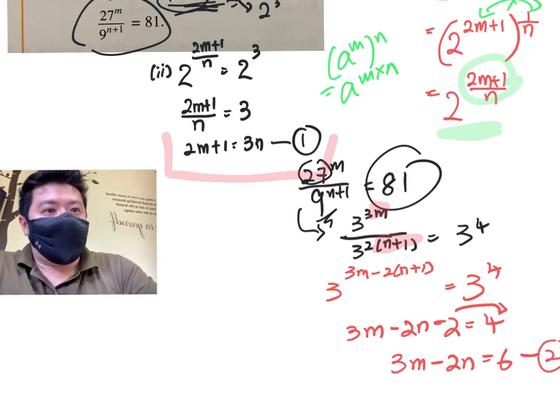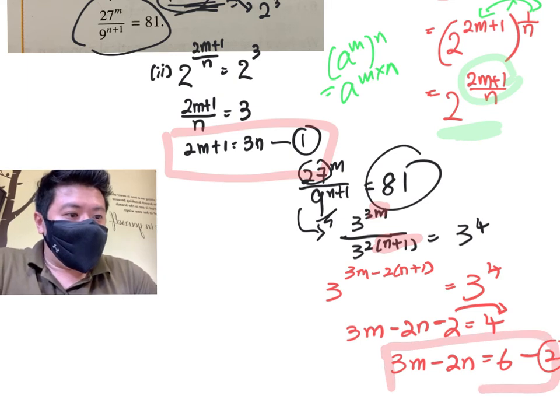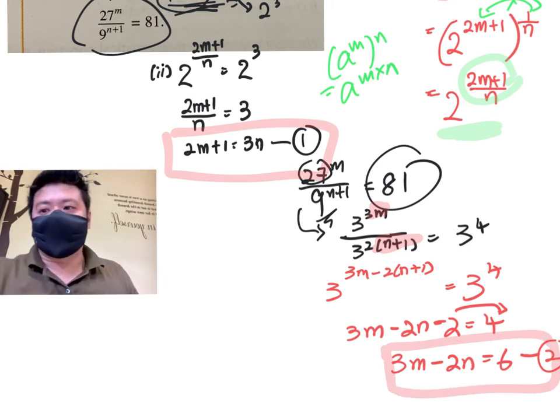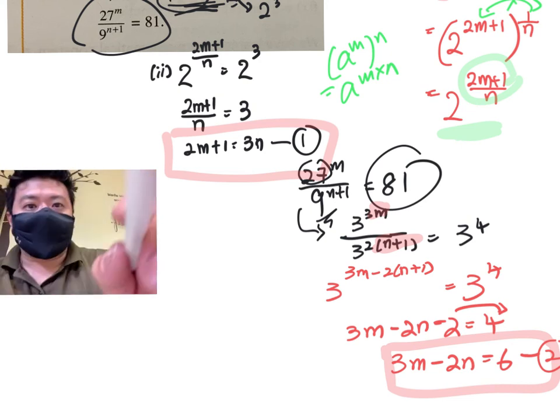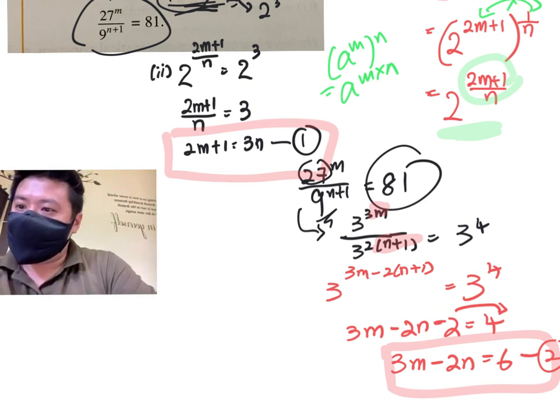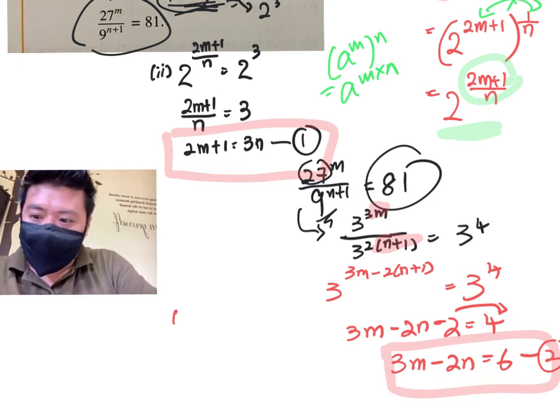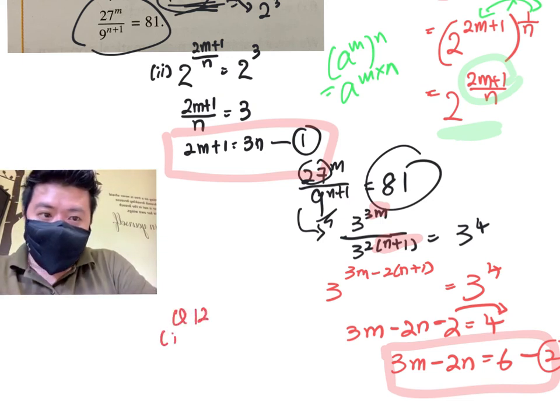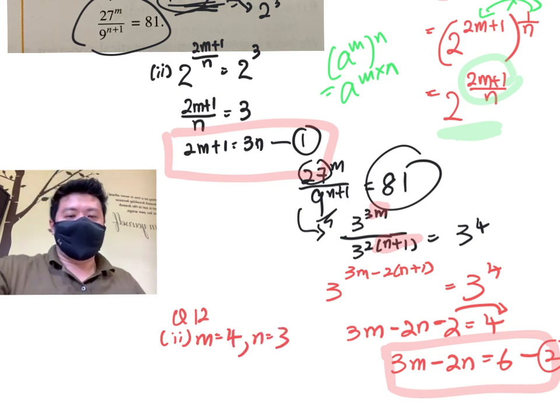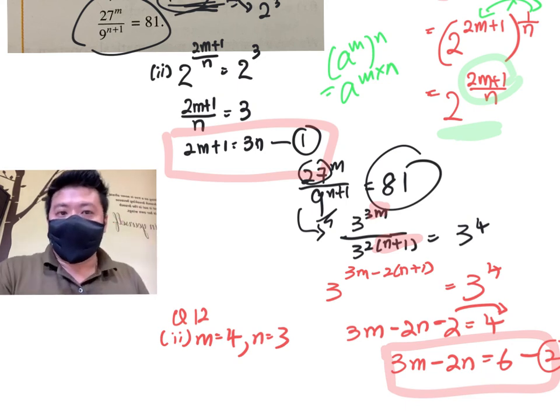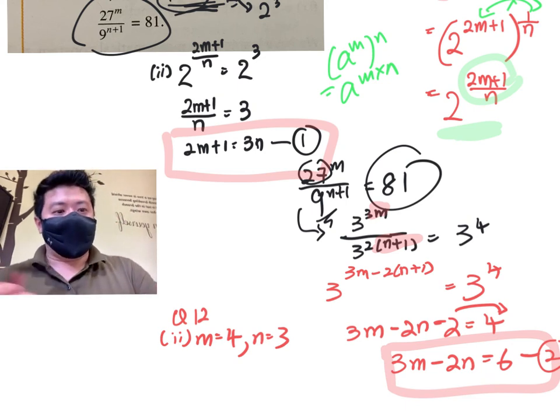Now, you just take equation 1 and equation 2 and you start to solve. You should be able to get your answers. Let me have a quick look. Based on the textbook, your answer should be for question 12, m should be equal to 4 and n should be equal to 3. So all the best and I hope you have understood this video well. Thank you.